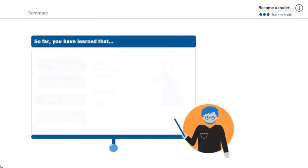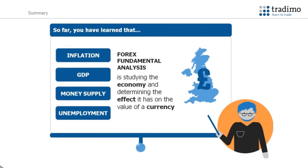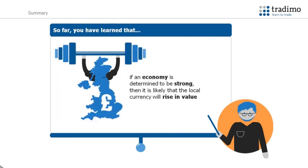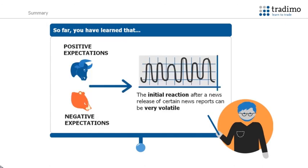So far, you have learned that Forex fundamental analysis involves studying the economy to determine the effect it has on the value of a currency. If an economy is determined to be strong, then it is likely that the local currency will rise in value. Economic reports can be used to determine how strong an economy is. These reports are released at set times and the release times are generally published in advance. The financial markets react to the reports when they are released.